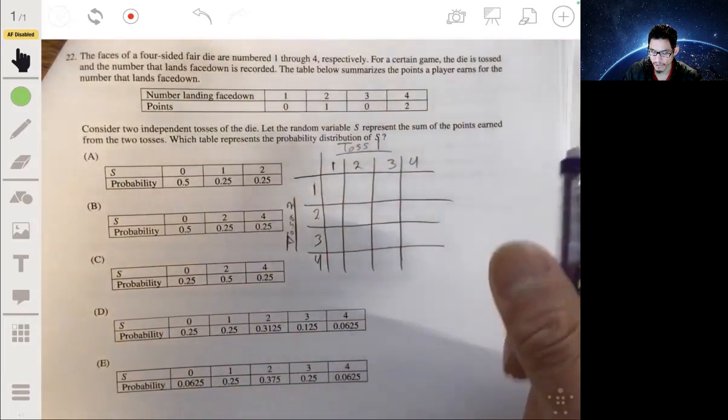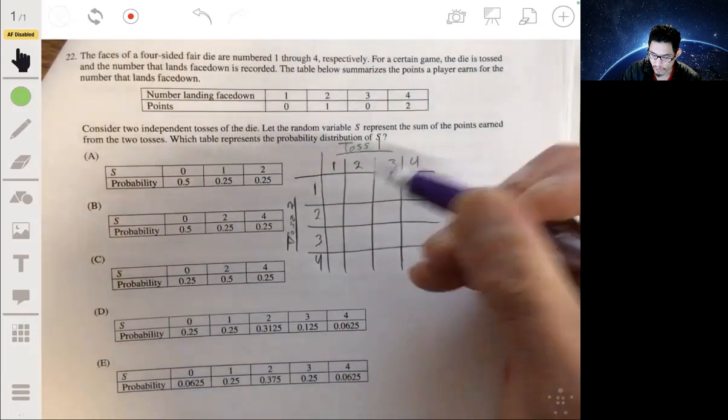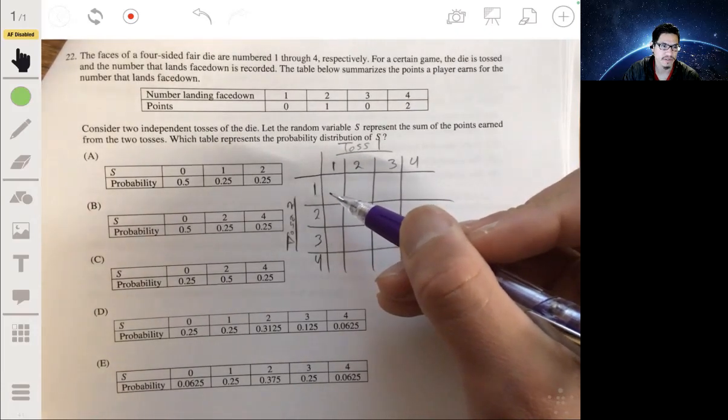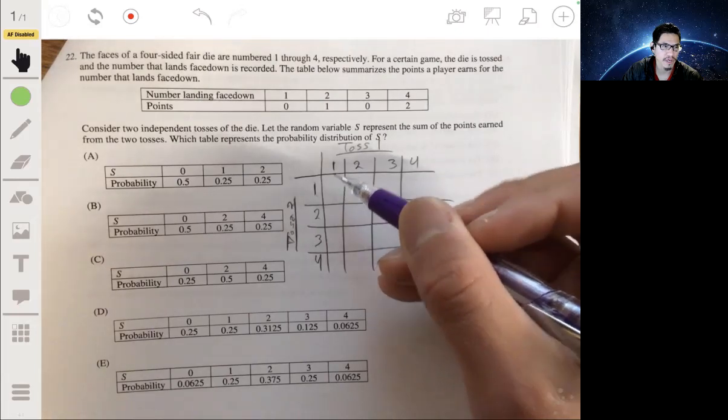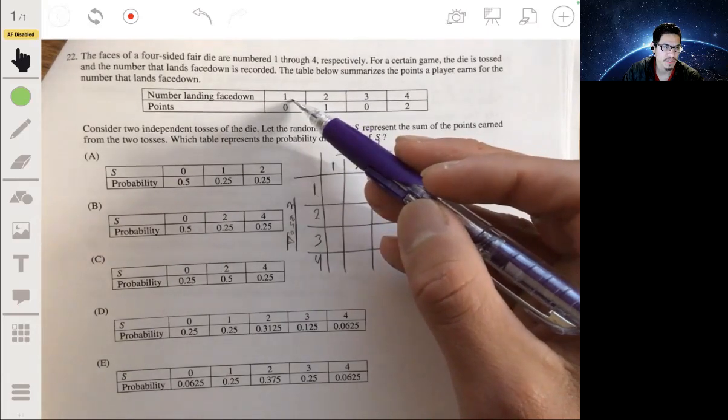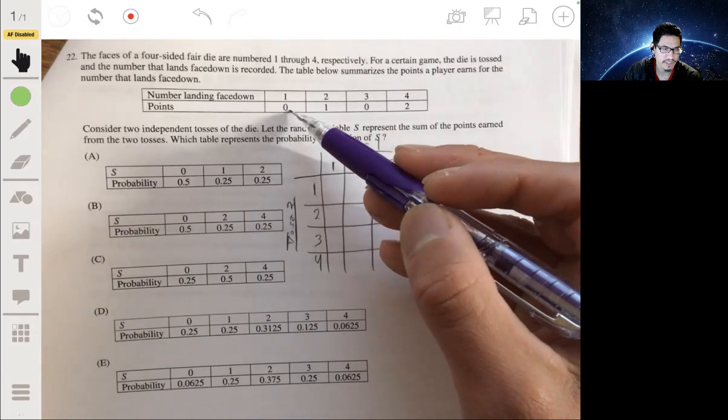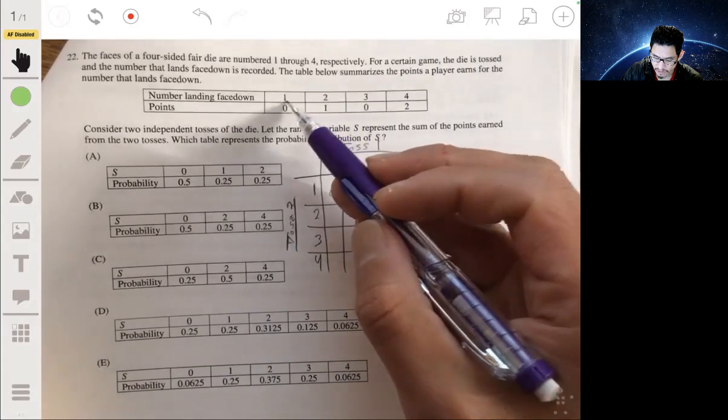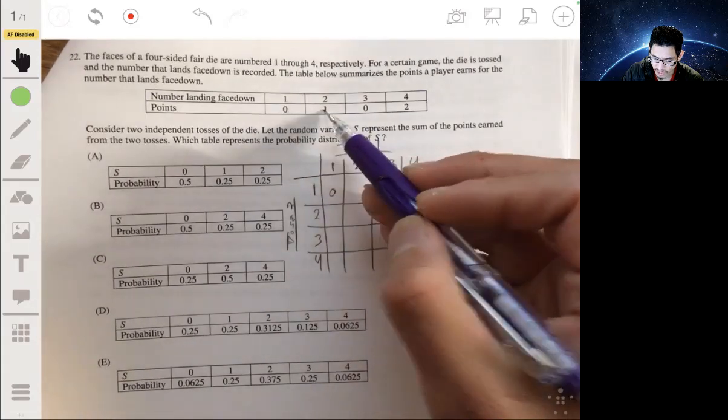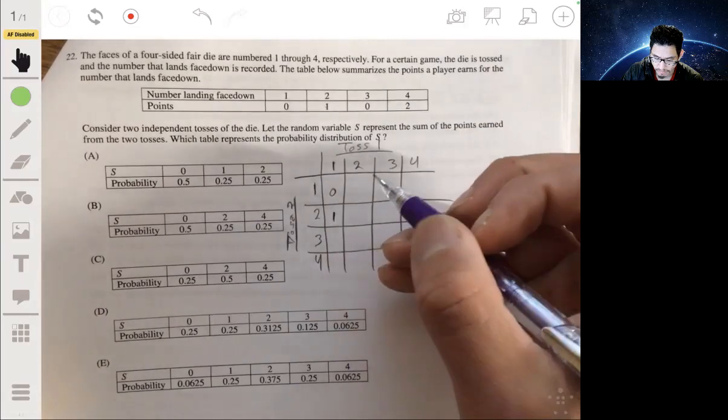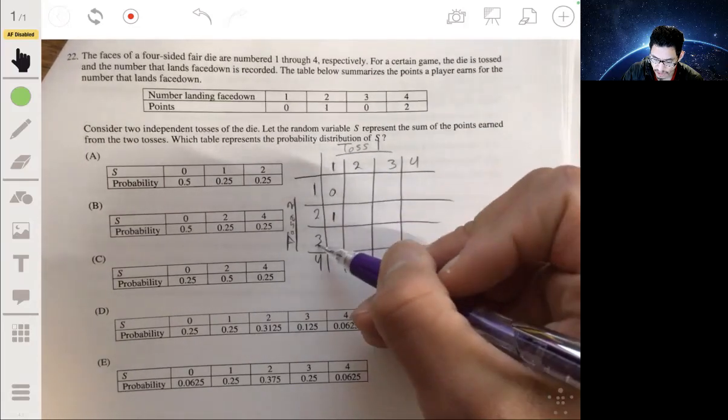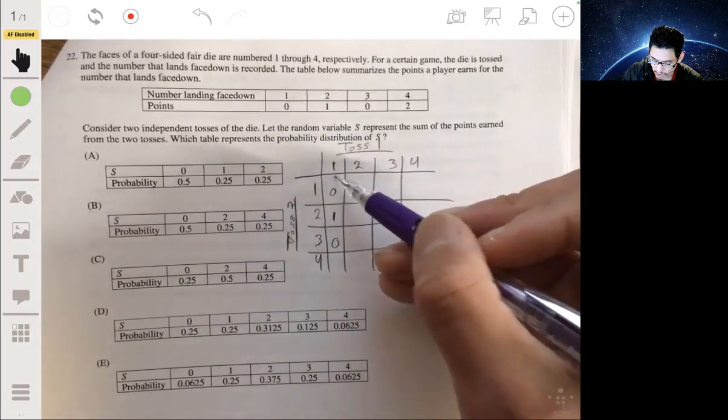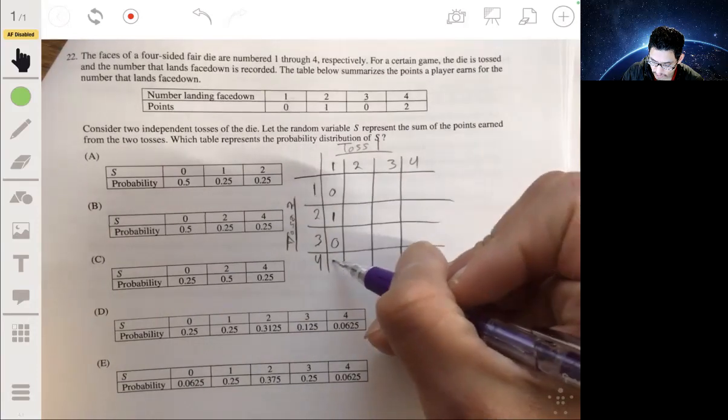So toss one, you can get a 1, 2, a 3, or a 4, right? And same thing for toss two, you can get a 1, 2, 3, or a 4. Now in here we're going to write the points that you get when you roll a 1 and a 1 on that toss. So like the points you get if you roll a 1 and a 1, you would get a 0 plus a 0, so you would just get 0. If you roll the 1 and then a 2, you would get a 0 plus a 1, so you just get 1. If you roll the 1 and then a 3, you get 0, a 1 and a 4, 2.